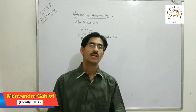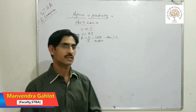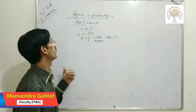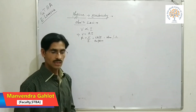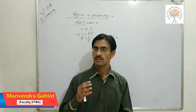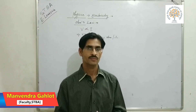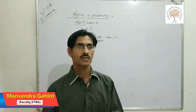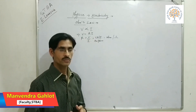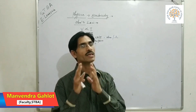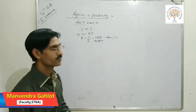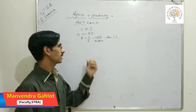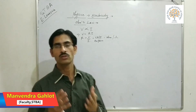Good morning students. In the last two classes of this electricity chapter, we discussed electrical appliances, the definition of current, potential difference, and how to make an electric circuit. The last class was related to Ohm's law. We will start by revising Ohm's law, then continue with what you mean by resistance, what factors affect resistance, and how we can solve numericals.